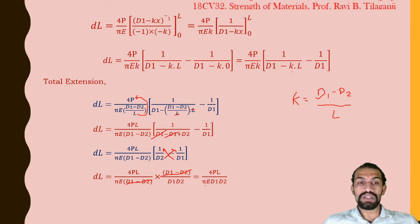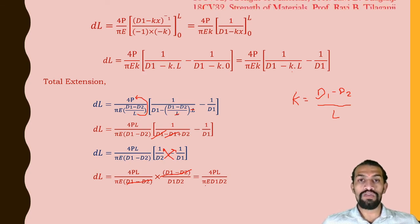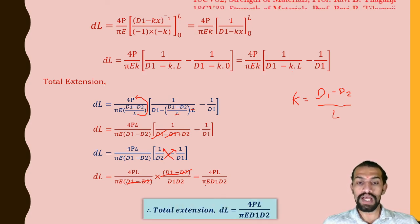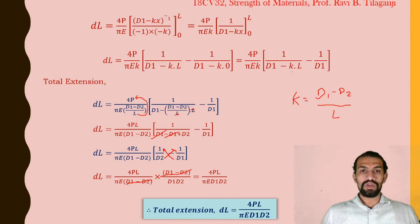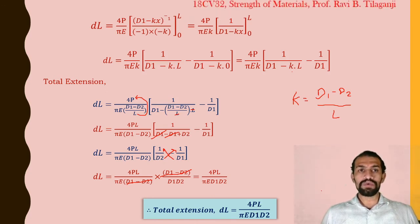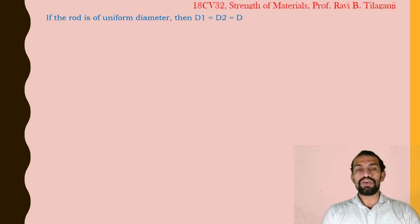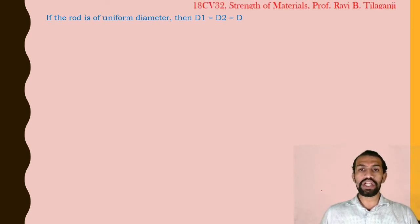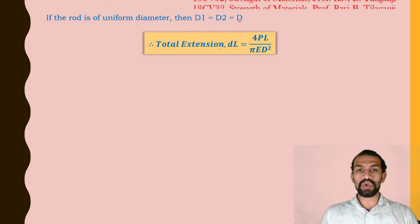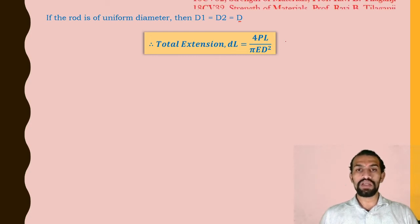Therefore, the total extension for the analysis of a circular rod with varying sections is: δL equals 4PL divided by πE·D1·D2. As a check, if the rod has uniform diameter where D1 equals D2 equals D, the equation simplifies to δL equals 4PL divided by πE·D².